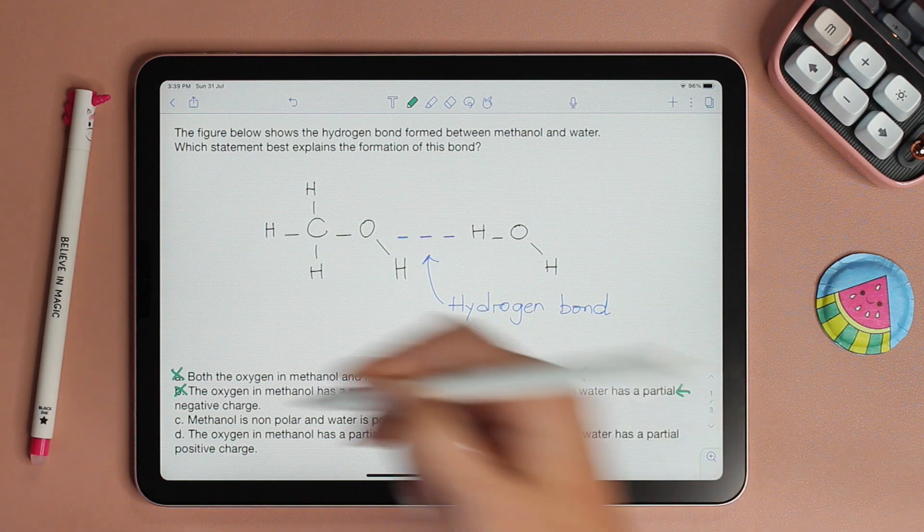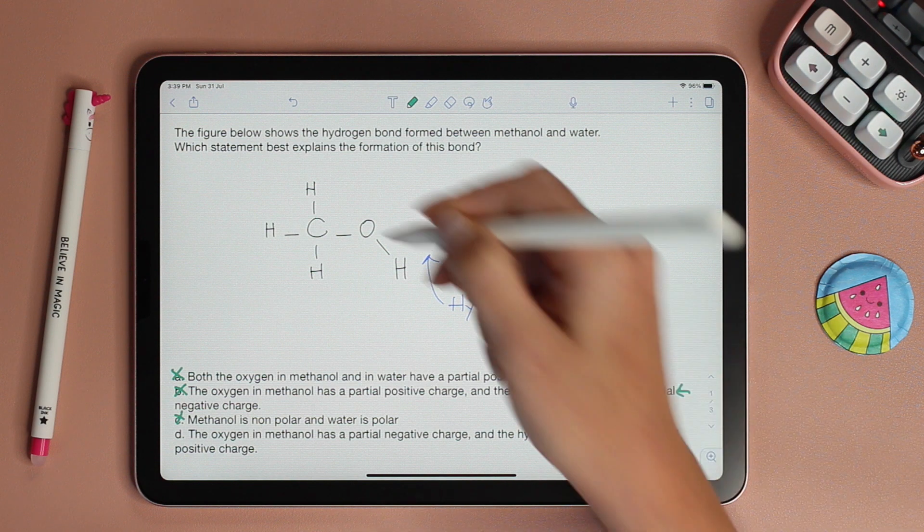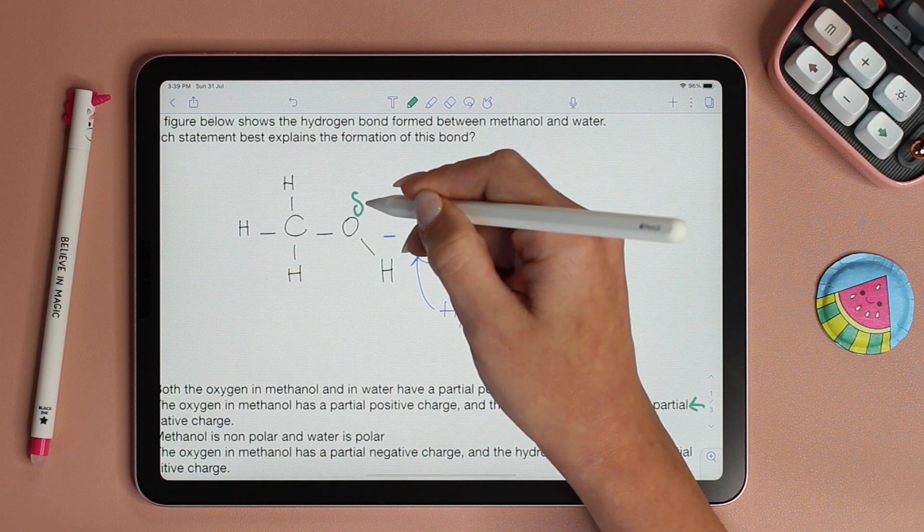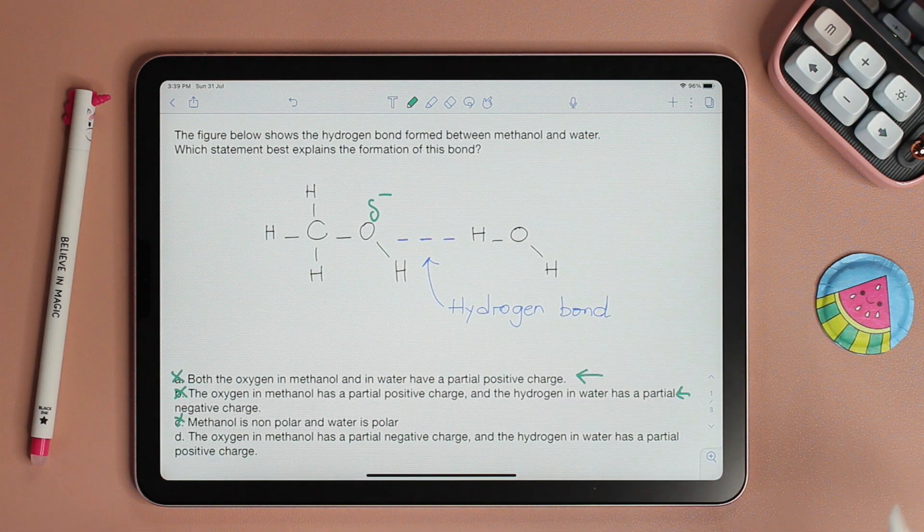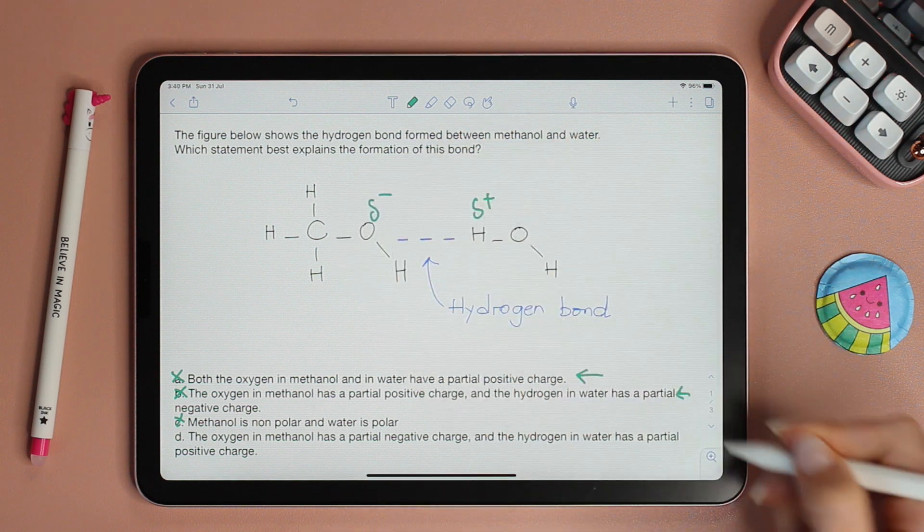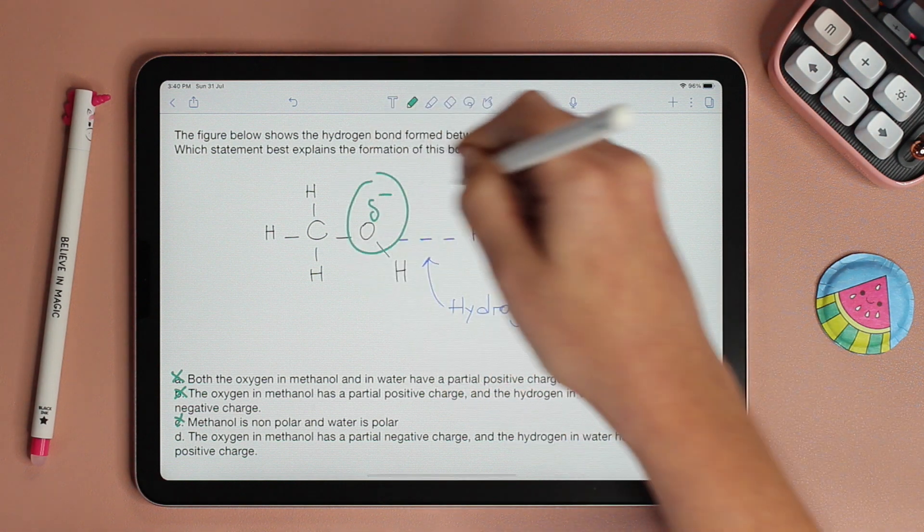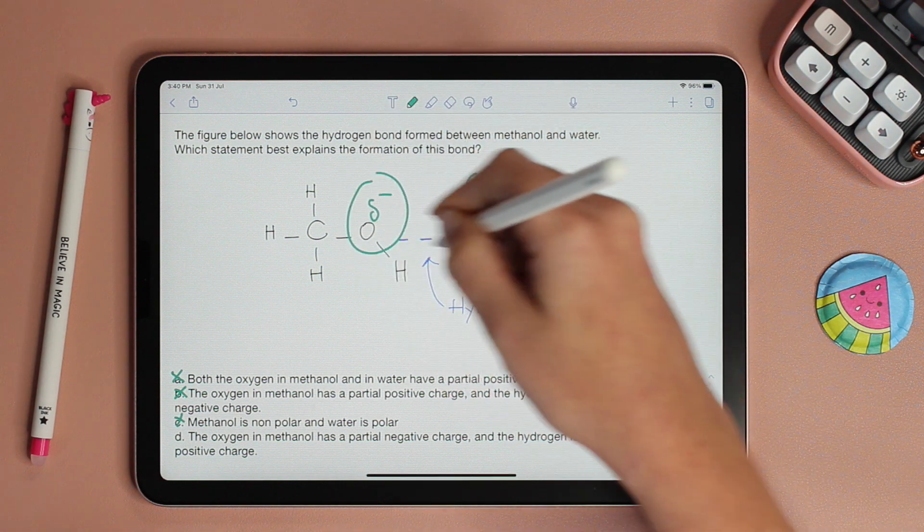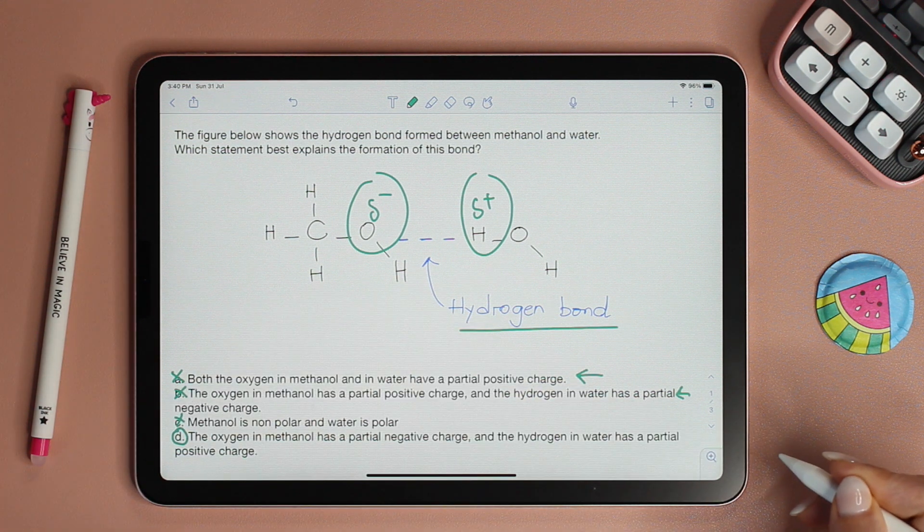That leaves us with the last choice, D. The oxygen in methanol has a partial negative charge and the hydrogen in water has a partial positive charge. Does this explain why the hydrogen bond is forming? Of course, because delta negative, delta positive attract and a hydrogen bond forms. So the choice here is D.